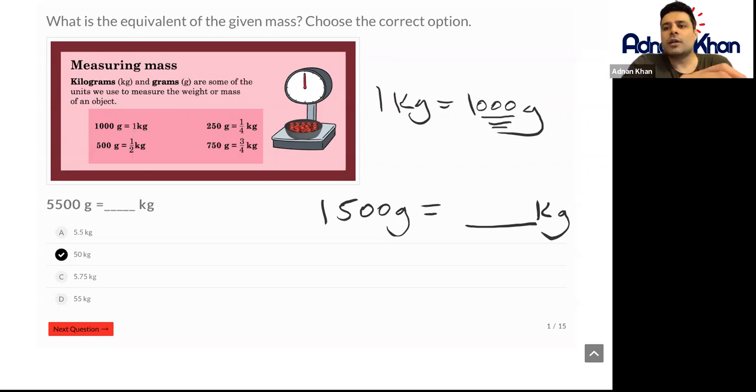To turn 1500 grams into kilograms, the answer will be shorter. So what we do is we divide this by 1000, because remember there are 1000 grams in a kilogram.